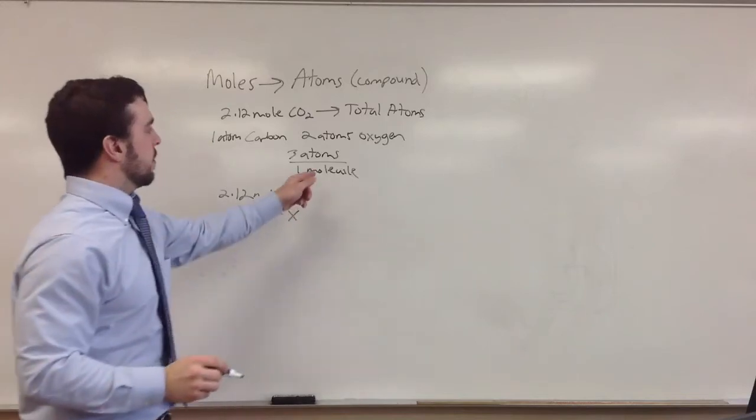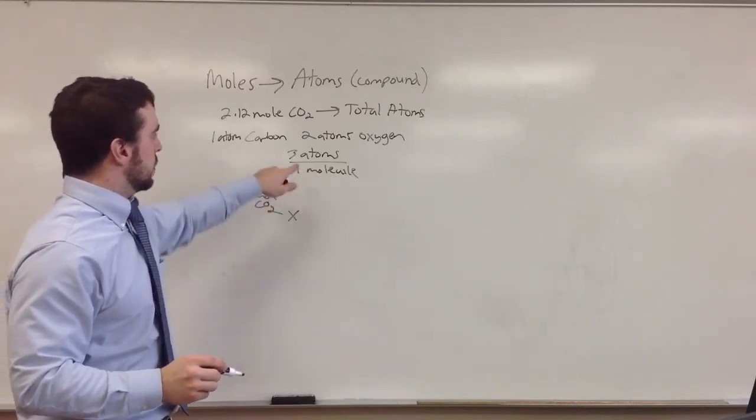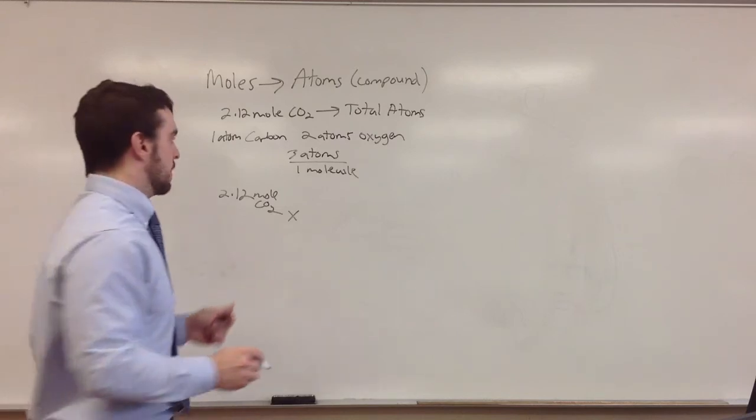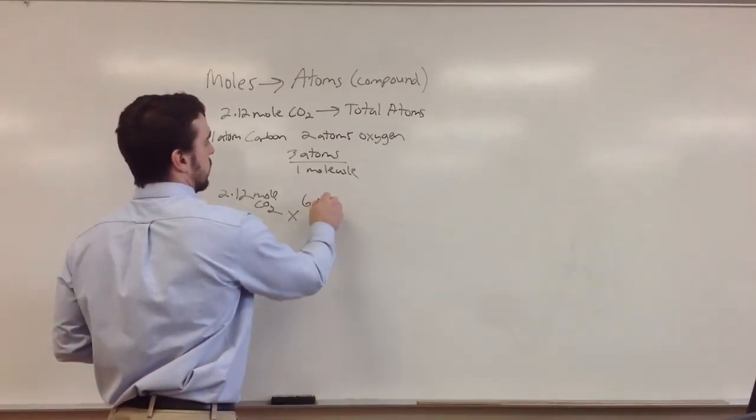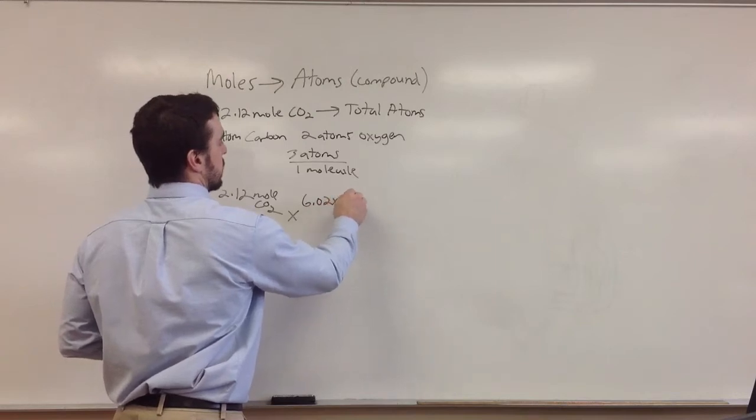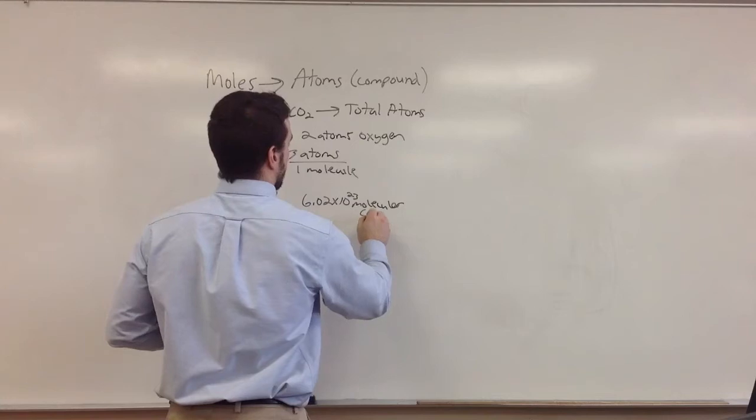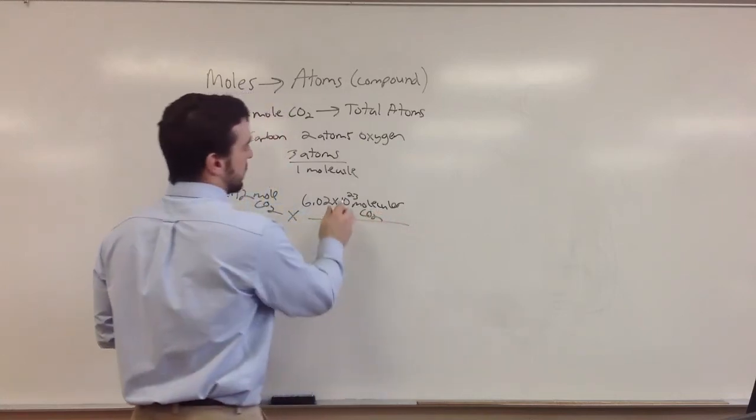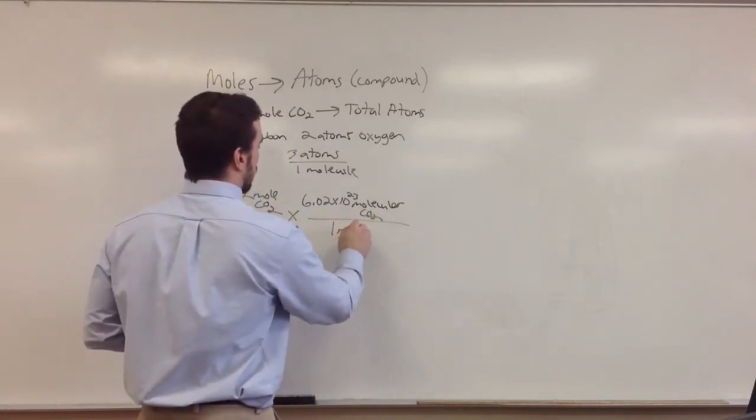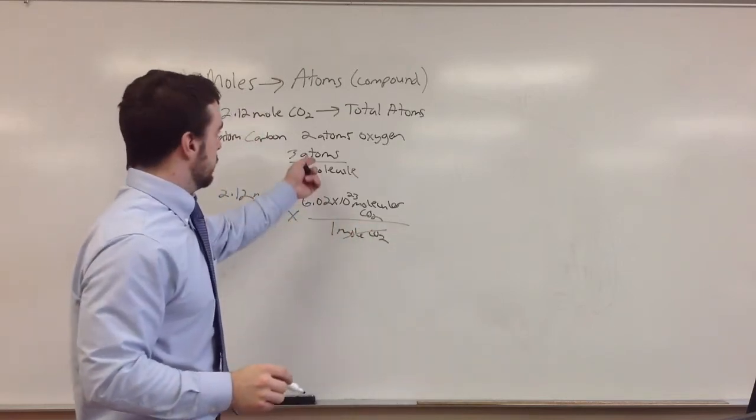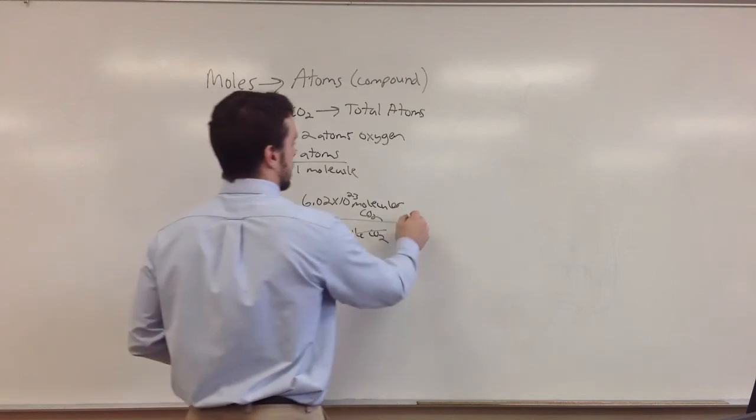Now we're going to have to figure out a way to get this to molecules, because we need something that's going to cancel out with molecules to get to atoms. So we can use Avogadro's number: 6.02 times 10 to the 23rd molecules CO2, because remember that's any representative particle, over one mole CO2. Moles cancel out. Now we can use our other conversion factor to get to atoms.